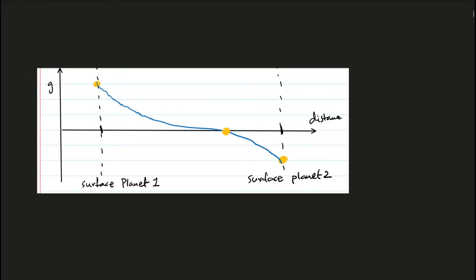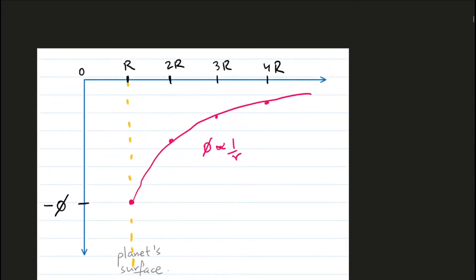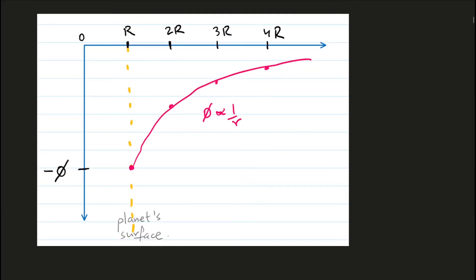The second graph shows gravitational field strength between two different planets. It shows how the gravitational field strength varies from the surface of the first planet to the surface of the second planet. Both planets have gravitational field strengths in different directions, and there is a point between them where the gravitational field strength of both planets is equal to each other, so the overall gravitational field strength becomes zero. That is where the graph crosses the x-axis. It is also clear from this graph that the gravitational field strength on the surface of planet one is much stronger compared to that on the surface of planet two.